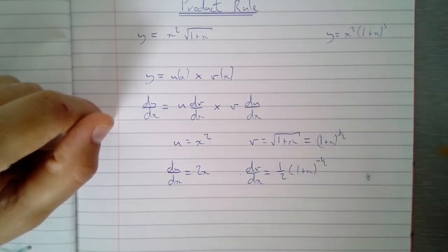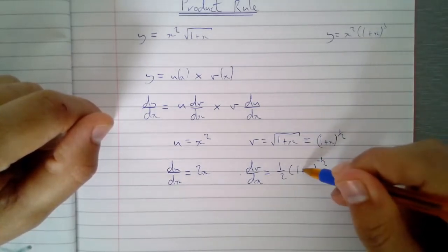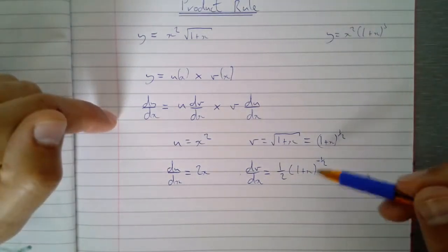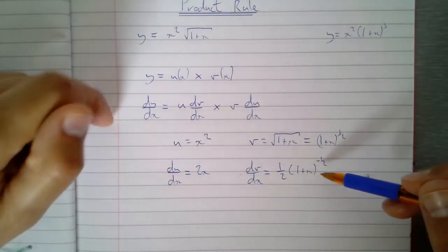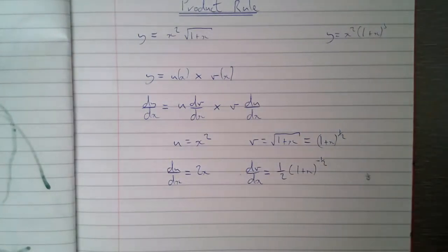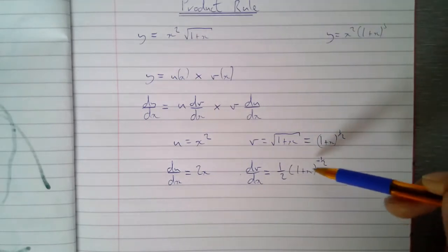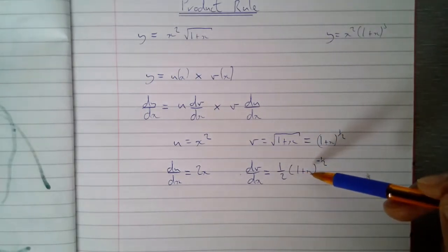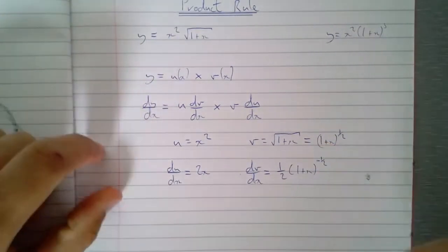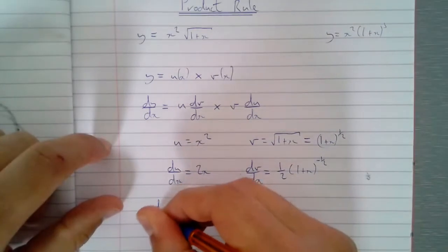I then need to differentiate what's inside and times it by it. And if I differentiate inside I just get one. So I've used the chain rule on this to find out what the differential is. Obviously if this was one plus two x inside, then I'd have to times by two afterwards because that would be the differential of what was inside the bracket.